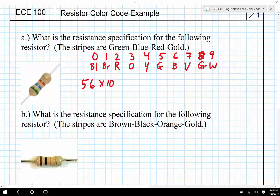That'll be times ten to the next stripe. The next stripe is red, and so you can see red is two, so that's 5, 6 times ten to the second power, so this is 5, 6 times a hundred.